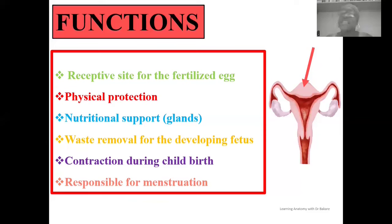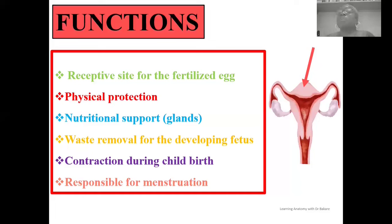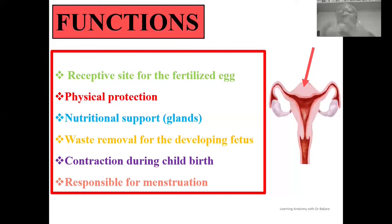Finally, the uterus is also the organ of target during menstruation. After the release of a mature egg and fertilization within the uterine tube, the endometrium lining of the uterus undergoes proliferation — thickening to create the space for the implant. In the absence of fertilization, the already thickened endometrial lining needs to be shed, and this shedding is what leads to menstruation.